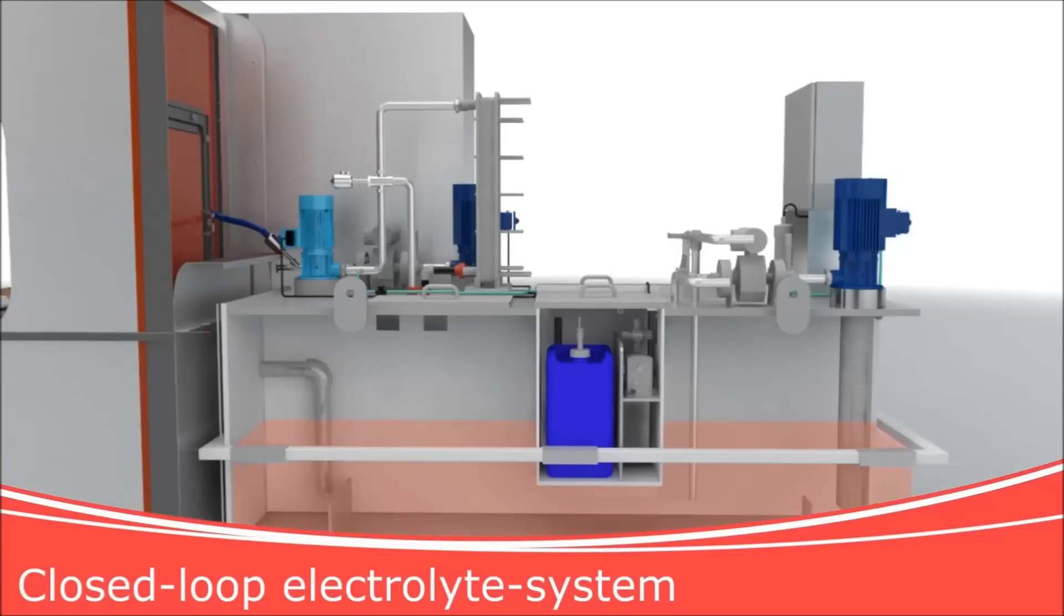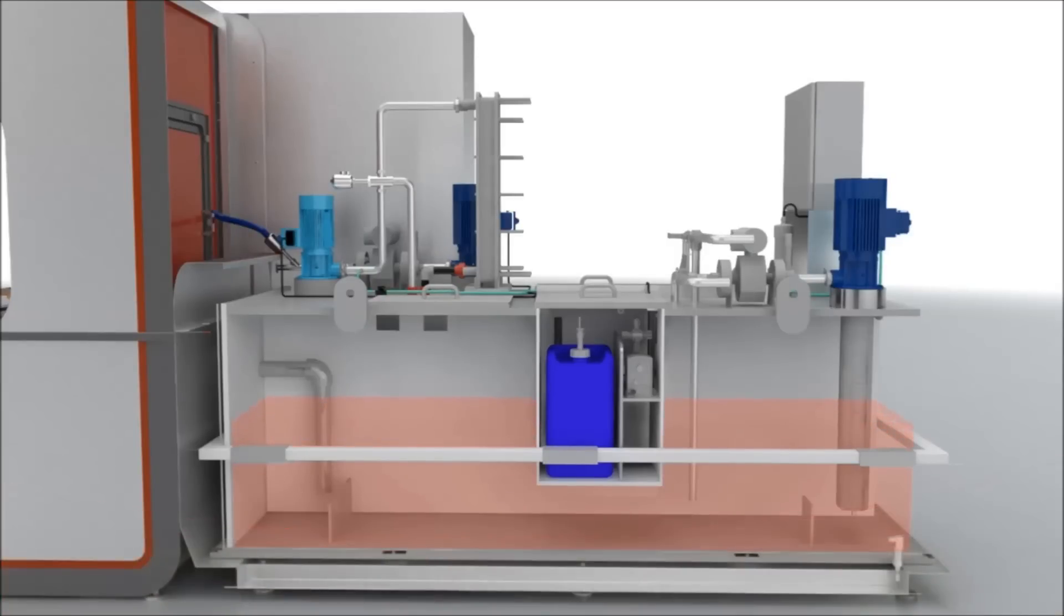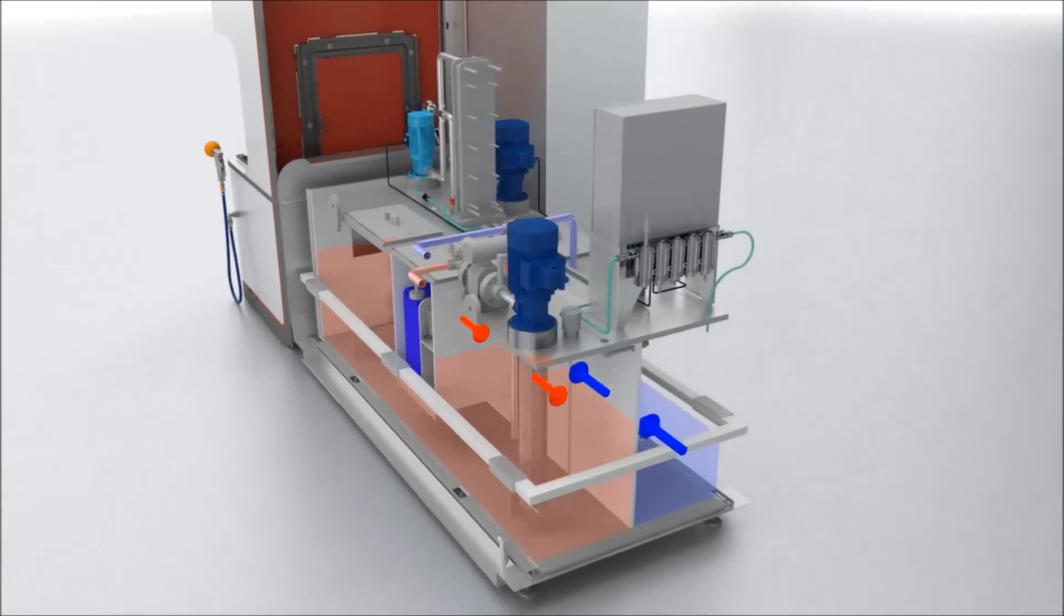The electrolyte system operates in a closed-loop circulation mode. In the integrated filtration unit, the dissolved material is filtered out of the electrolyte as metal hydroxide.